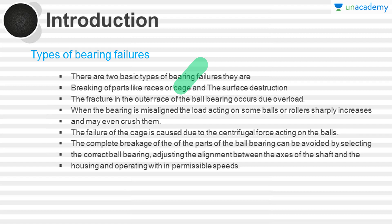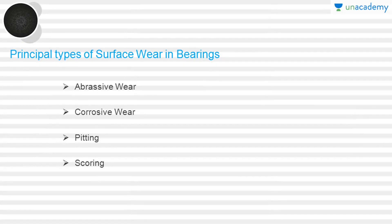Now we are going to discuss the different types of failures in ball bearings. The main failure of ball bearings is due to surface wear. The principal types of surface wear in bearings are abrasive wear, corrosive wear, and pitting and scoring.